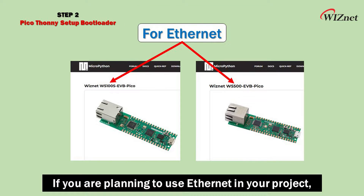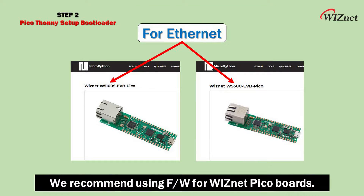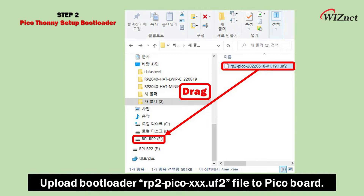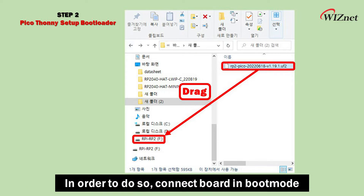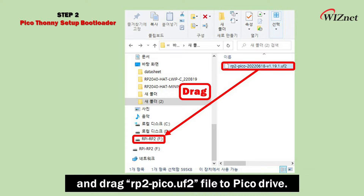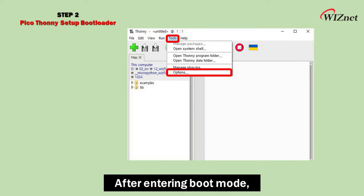If you are planning to use Ethernet in your project, we recommend using firmware for Wisnet PicoBoards. Upload the bootloader UF2 file to the PicoBoard. In order to do so, connect the board in boot mode and drag the UF2 file to PicoDrive.